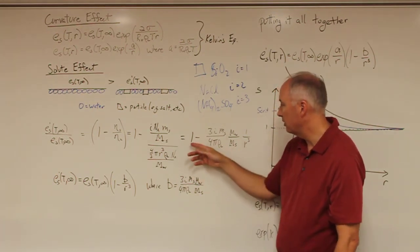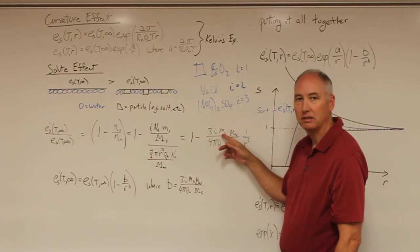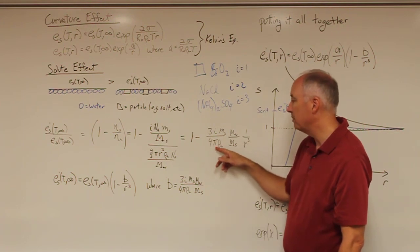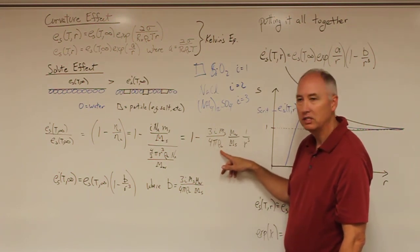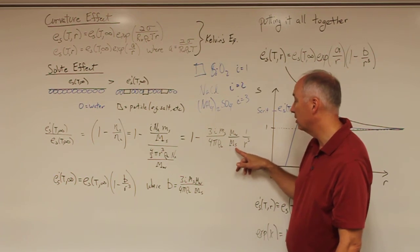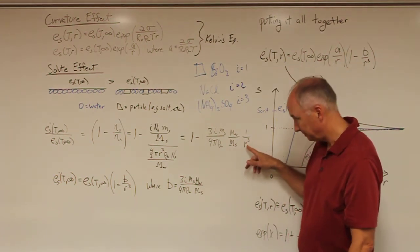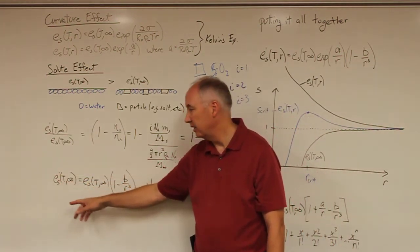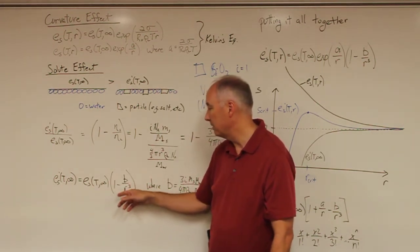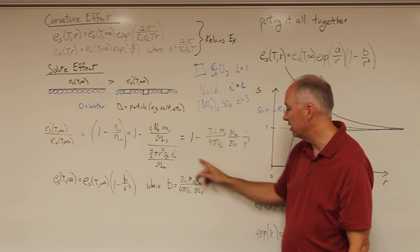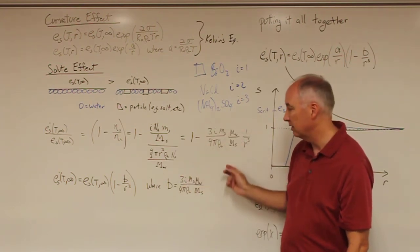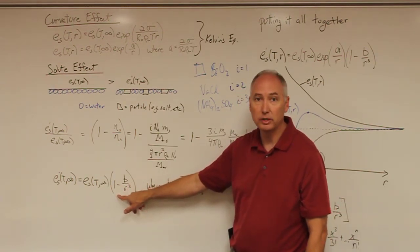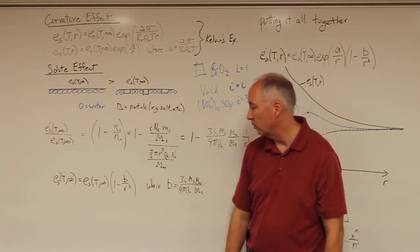Mathematically, we can rearrange that to get 1 minus 3i times the mass of the solute times the molecular weight of water, over 1 divided by 4 pi, times the density of liquid water, times the molecular weight of the solute, times r cubed. We usually write this in a simplified form: e sub s prime of T of infinity is equal to e sub s of T of infinity times 1 minus b over r cubed, where b is the constant out in front. So you'll see that the presence of the solute reduces the saturation vapor pressure over that plain surface of a solution droplet.